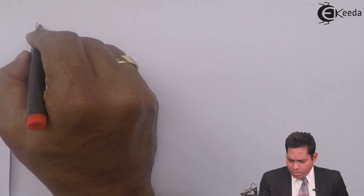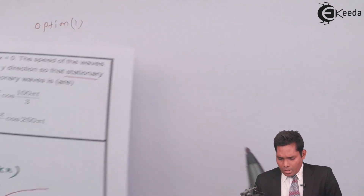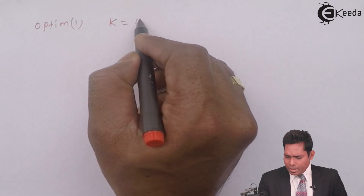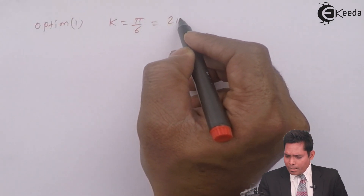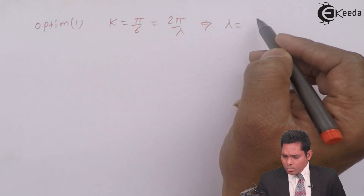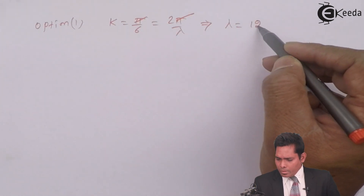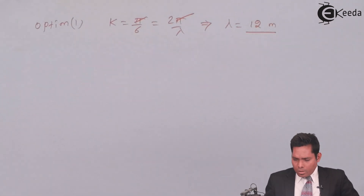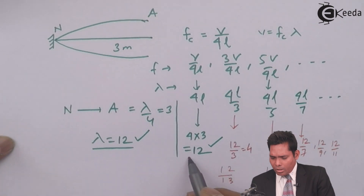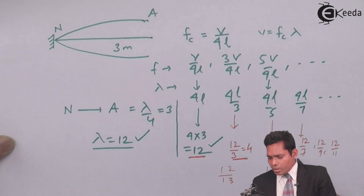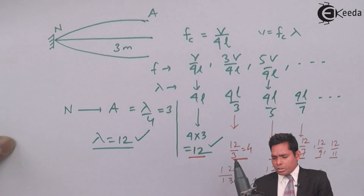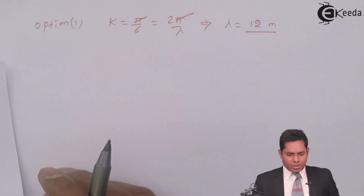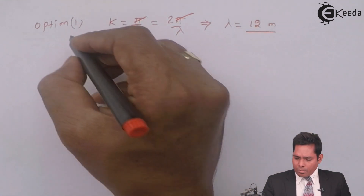For option 1, k = 5π/6. Using k = 2π/λ, we get λ = 2π/(5π/6) = 12. Since λ = 12 is in our list of valid wavelengths, option 1 is correct.